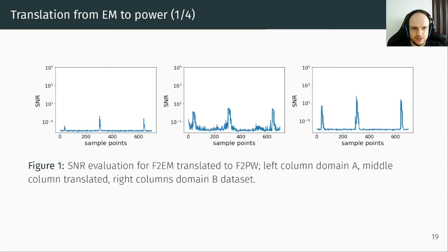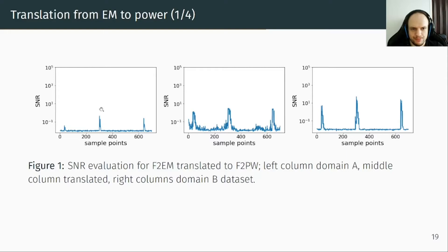First, we investigated the translation from EM to power. This graph shows the SNR evaluation for F2 EM translated to F2 power. On the left is the SNR graph from F2 EM (domain A); in the middle, the SNR graph from translated traces; on the right, the SNR graph from F2 power (domain B). The x-axis is the sample point and the y-axis is the SNR value. We observe that the SNR from F2 EM is lower than from F2 power, and that the GAN retrieved the three main leakage positions — the SNR of translated traces is higher than F2 EM but lower than F2 power.